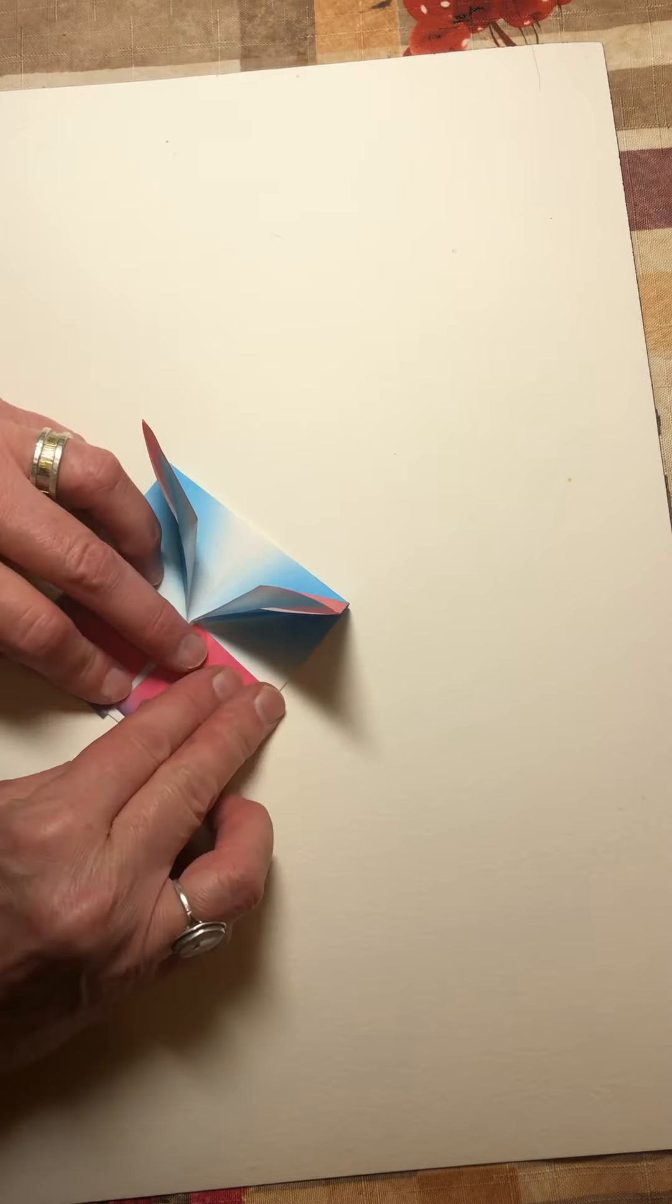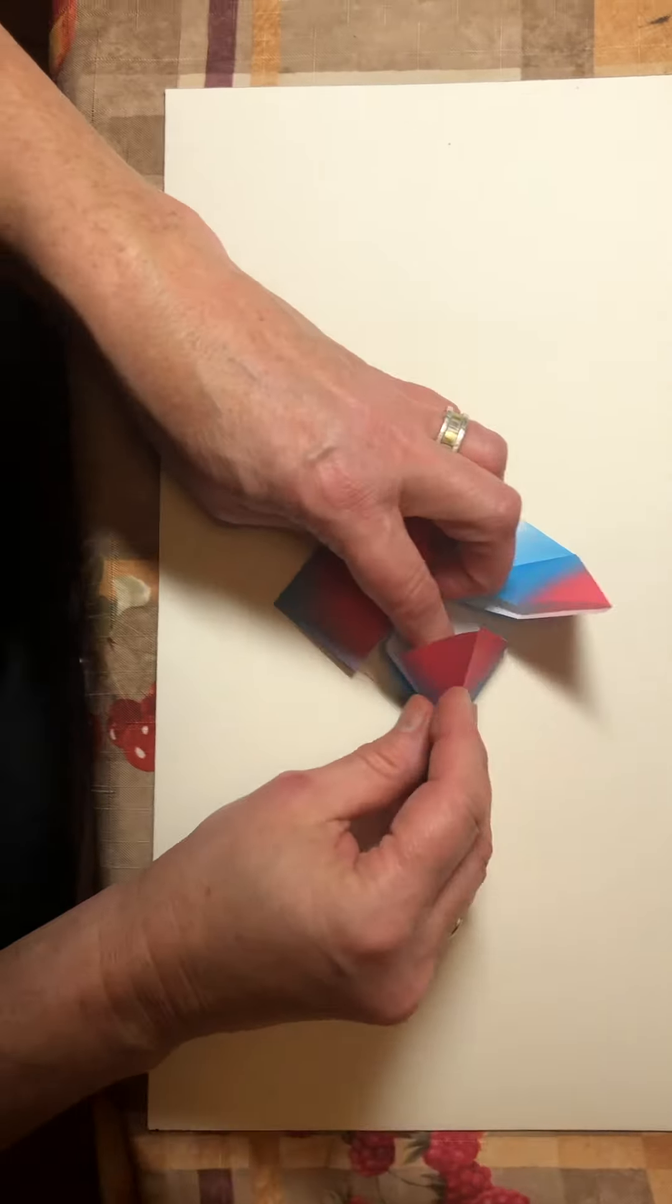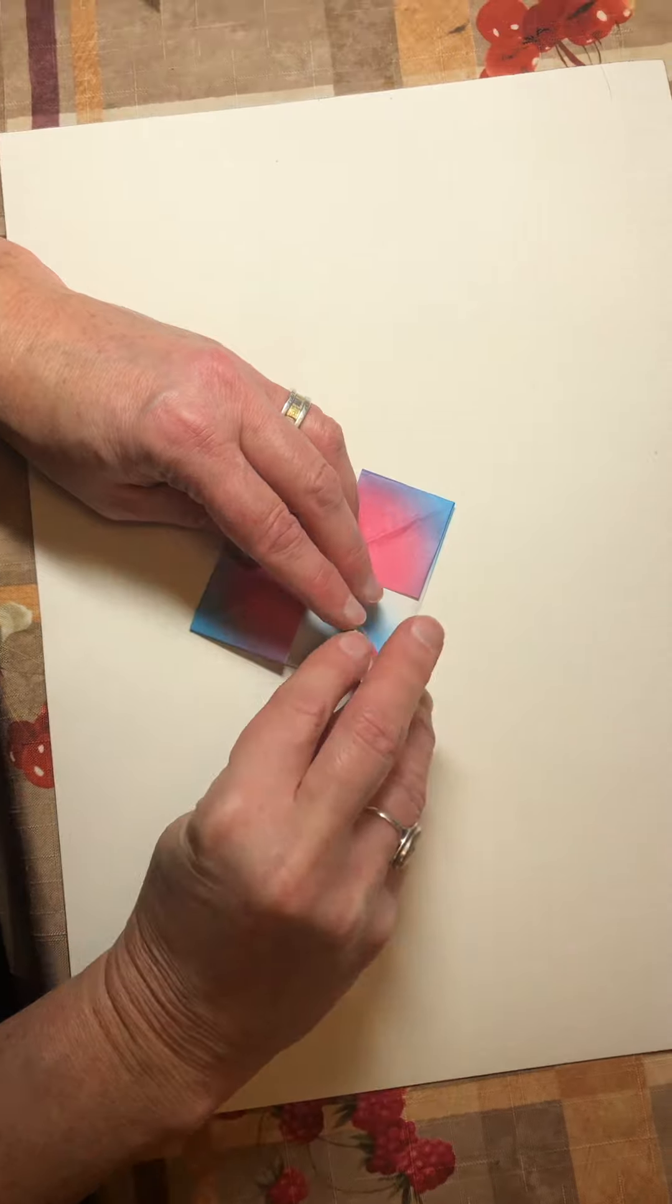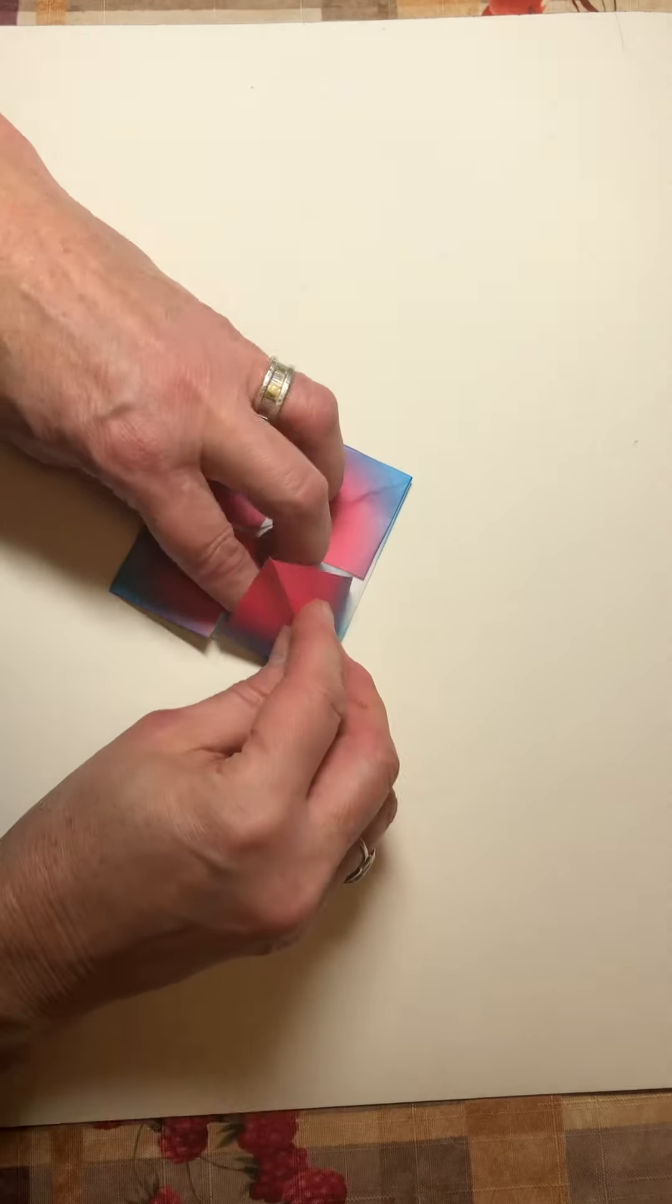Bawk, bawk, bawk. Squash it. Then we squash this one. This paper is really pretty. It's multi-colored. Squash that one.